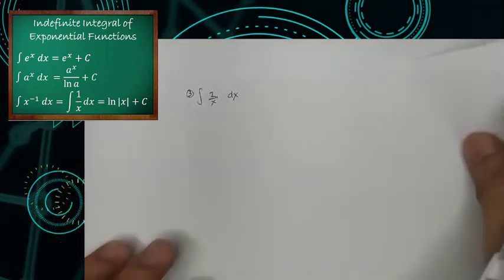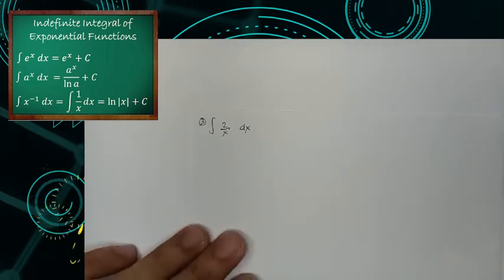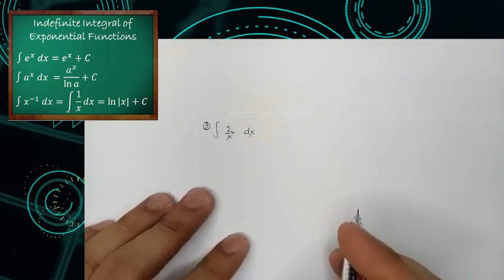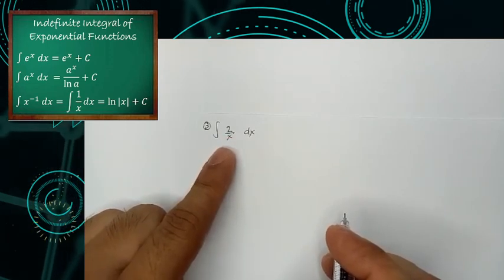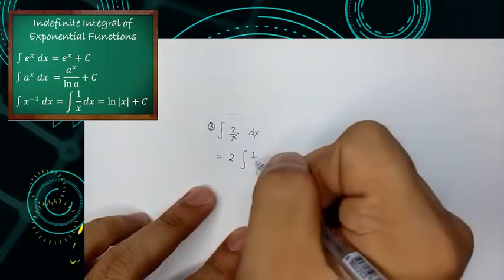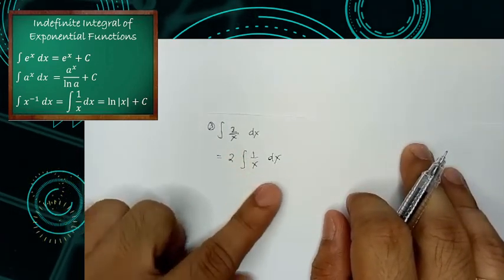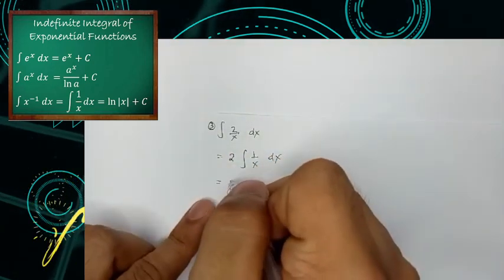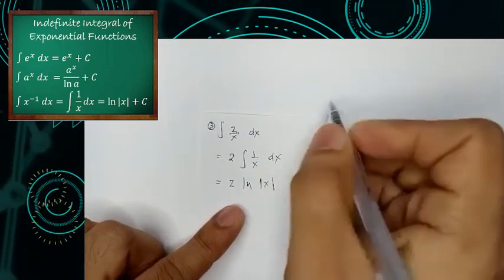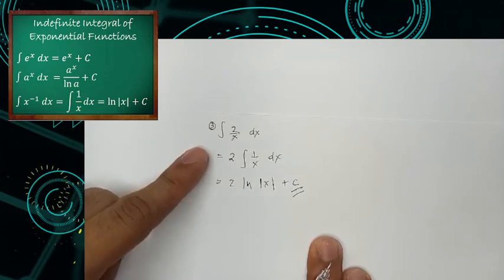Next, we have the third example: the integral of 2 over x dx, applying our third rule for the exponential function. We separate the constant, which is 2, giving us 2 times the integral of 1 over x dx. From our third rule, the integral of 1 over x dx is simply ln of the absolute value of x. So our final answer is 2 ln|x| plus C.